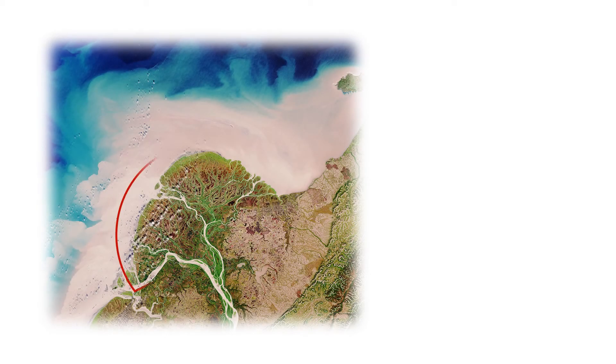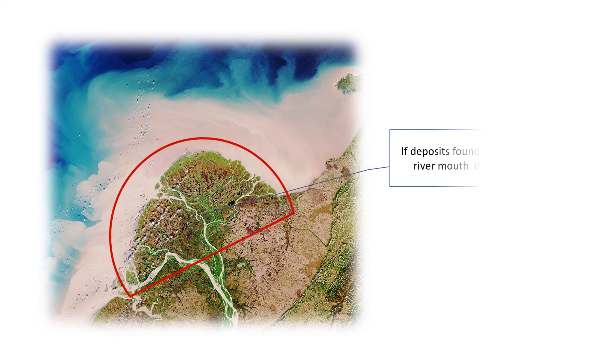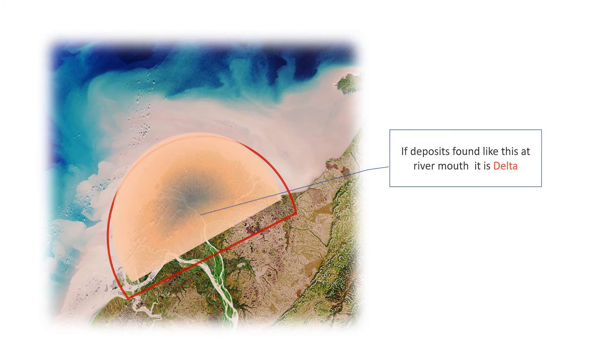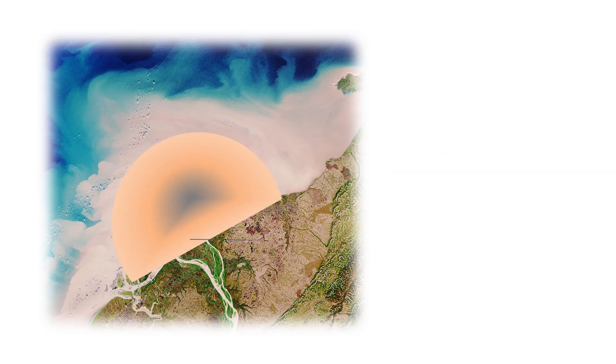One difference between a delta and an estuary is: if deposits are found at the river mouth, it is a delta. If they are absent, then it is an estuary.